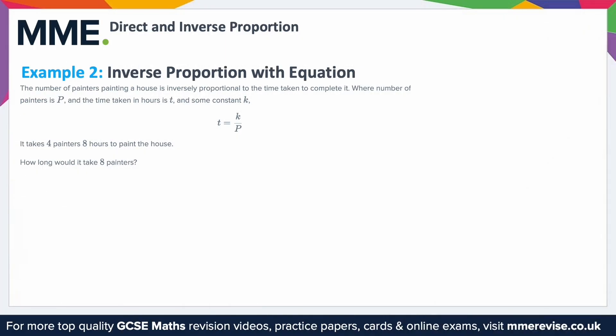Example 2: inverse proportion with equation. The number of painters painting a house is inversely proportional to the time taken to complete it. What that means is if there's more painters, it takes less time; if there's less painters, it takes more time — they go in the opposite direction. Where the number of painters is P, the time taken in hours is T, and there's some constant K. It takes 4 painters 8 hours to paint the house. How long would it take 8 painters?